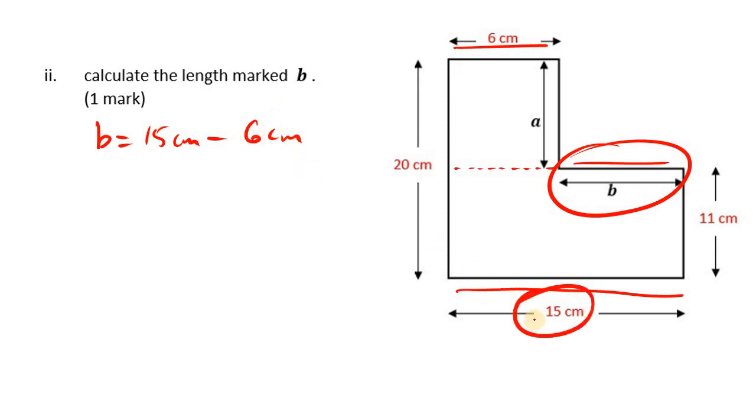Okay, so we take the larger length, and that's parallel to B, and take the other short length that's parallel to B, subtract them, that's it. And you're going to get 9 centimeters, as easy as that.